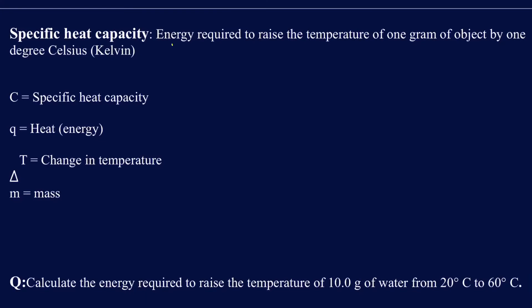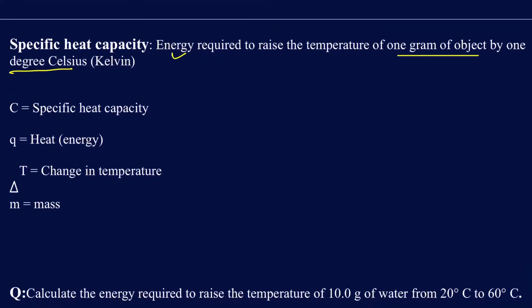The definition of specific heat capacity is the energy required to raise the temperature of one gram of an object by one degree Celsius. If specific heat capacity has a symbol C, it's equal to the energy Q divided by the mass M times the change in temperature ΔT. So C = Q / (M × ΔT), where Q is the heat or energy, ΔT is the change in temperature, and M is the mass.